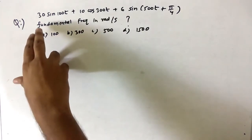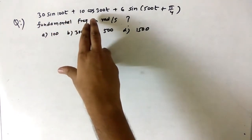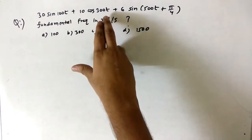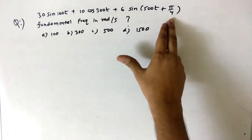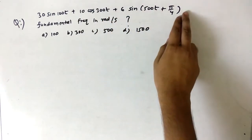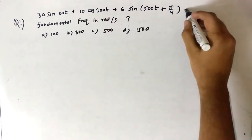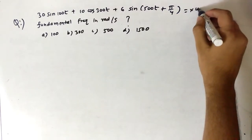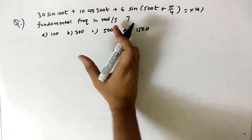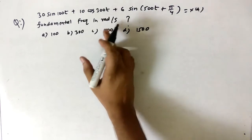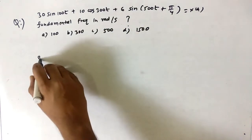The first question is: x(t) = 30sin(100t) + 10cos(300t) + 6sin(500t + 5π/4). What is the fundamental frequency in radians per second? The options are given.